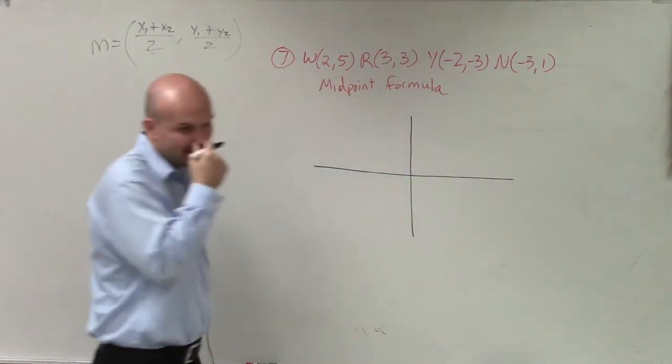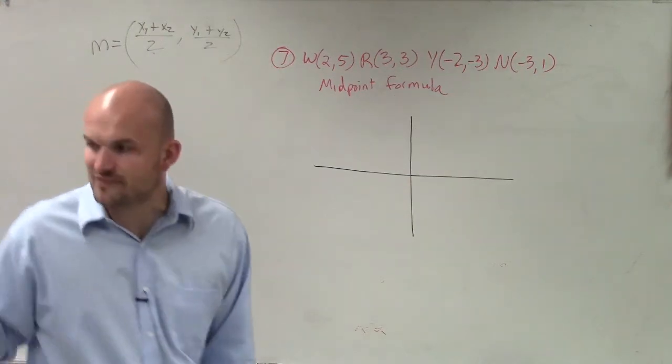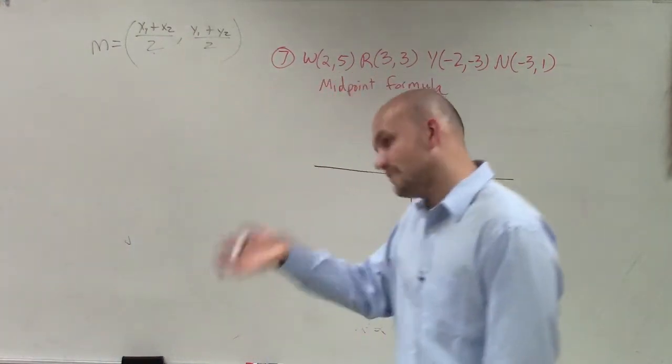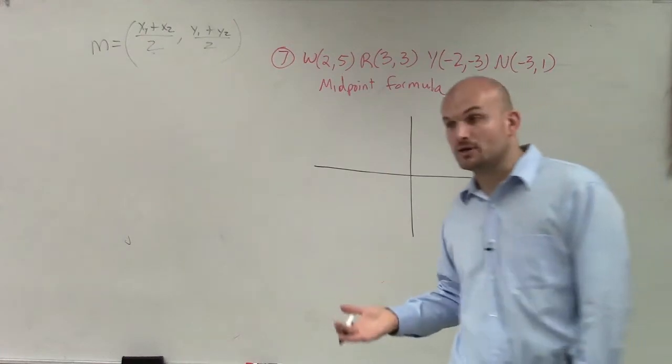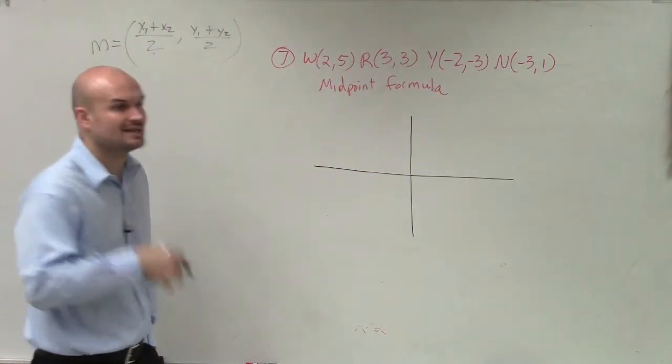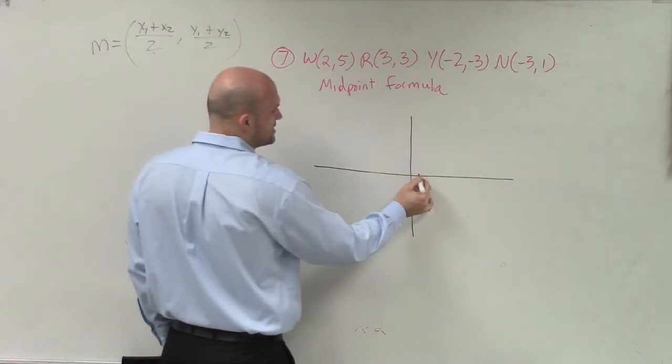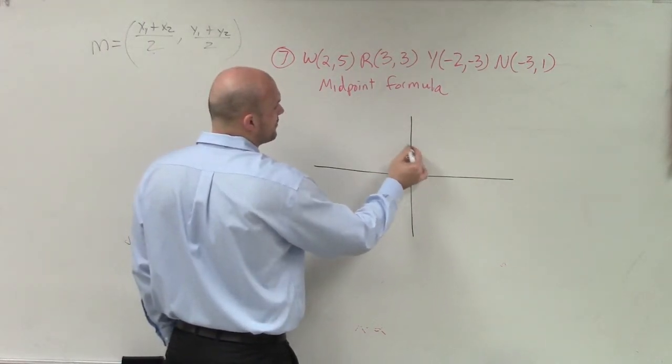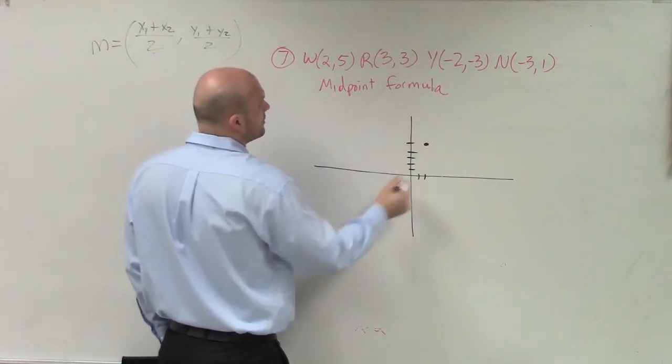Plot your points. Because they're asking us, do those points make up a figure that's going to make a parallelogram? So the first thing we need to do is not only plot them, but plot and label. So we have W, which is at (2, 5). That's W.